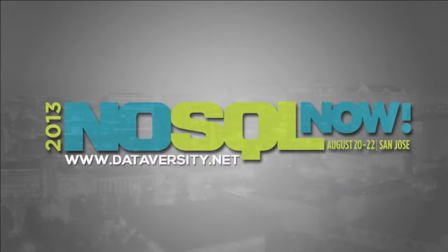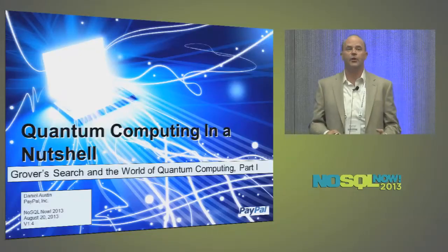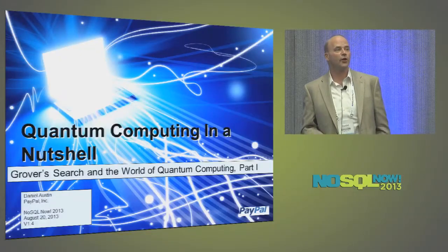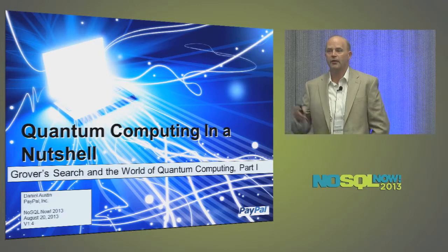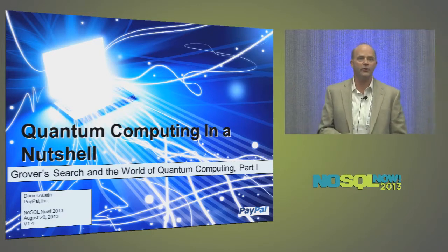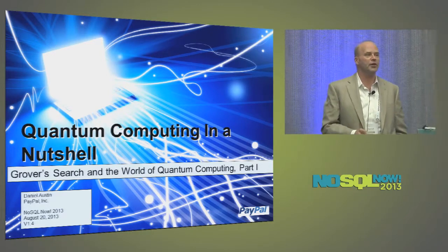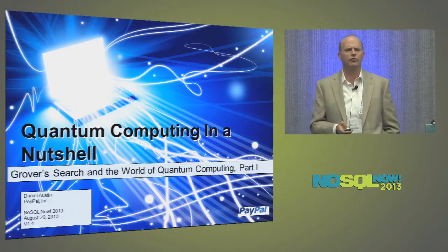Good evening everyone. I'm Daniel Austin, I'm chief architect at PayPal. Everybody got a PayPal account, right? Very good. This is a really fast talk, a little bit about me. In the past, I was a physicist. I worked at a place called CERN. The LHC lives there now. I ran into this guy named Tim Berners-Lee. It's all been downhill ever since.